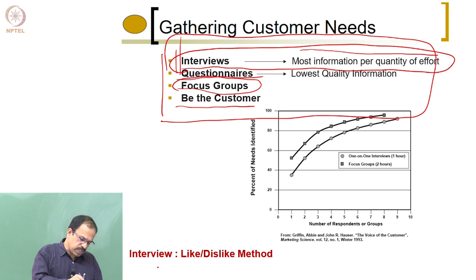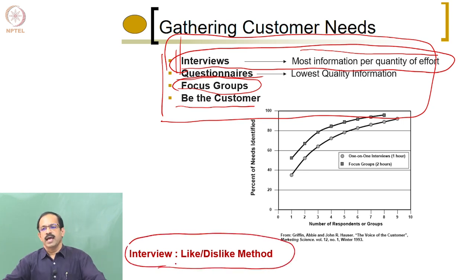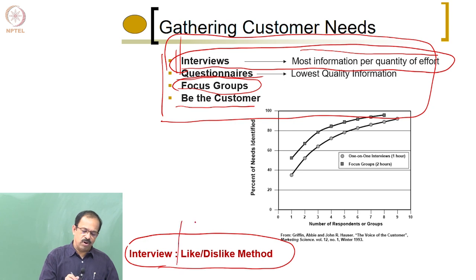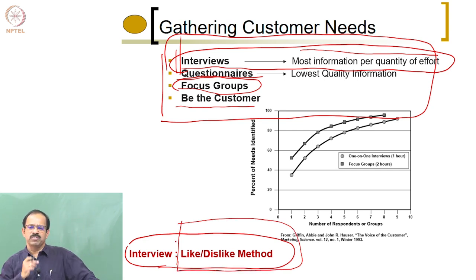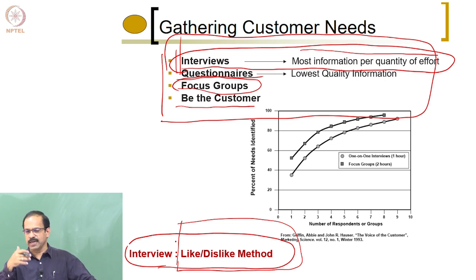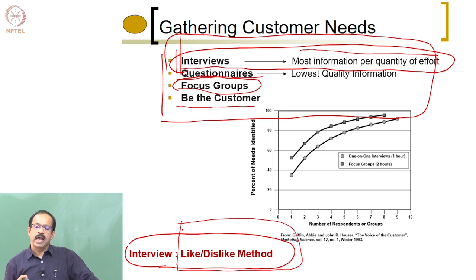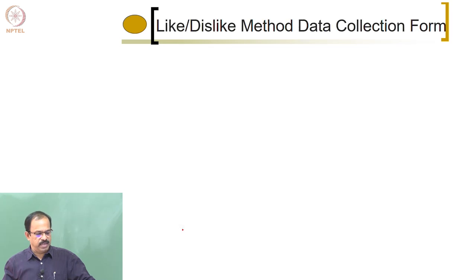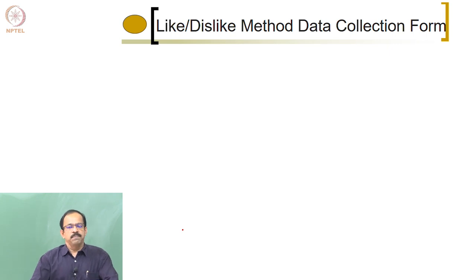One of the methods for interviews is known as the like-dislike method of interviewing. You go to a person with a particular format — the like-dislike method of data collection — and ask these questions to find out the customer requirements. If you ask directly 'what do you need in this product,' they will not be able to tell you clearly. But if you ask more specific questions clearly, they will be able to tell what kind of needs they have. This method helps you identify customer requirements in a direct way by asking questions.